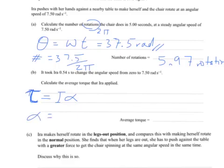The angular acceleration is change in velocity over change in time. Change in velocity in this case is final minus initial, 7.50 minus 0, so 7.50 over the change in time, 0.54.